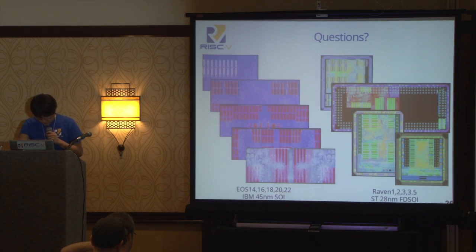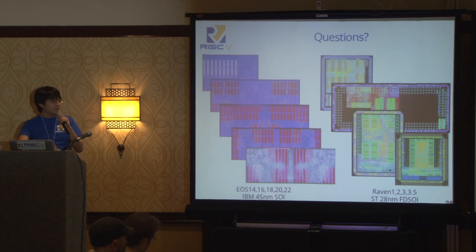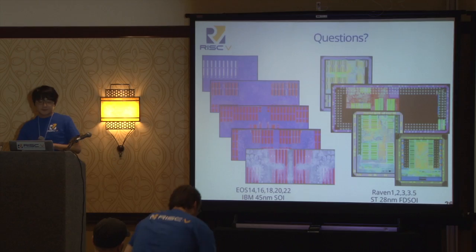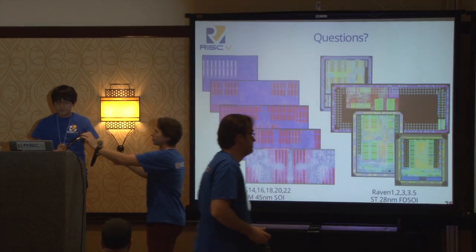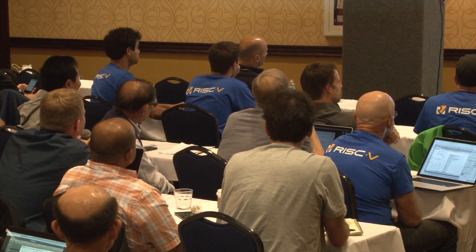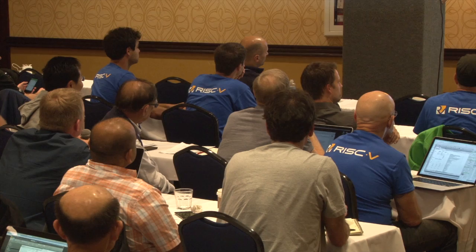That concludes the presentation. During Q&A, a question was asked about FPGA mapping performance. The response: the chip currently runs at about 50 MHz on FPGA. If you were to develop the same core in Verilog optimized for FPGA, you'd likely get better results since they map directly to the underlying architecture.